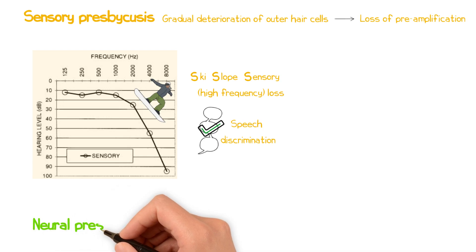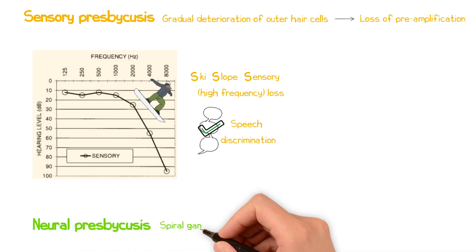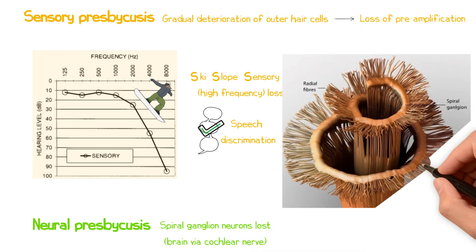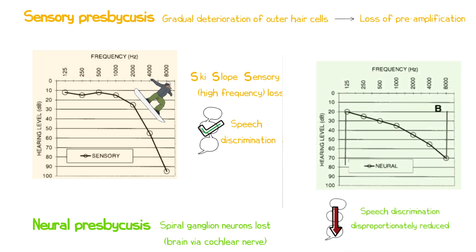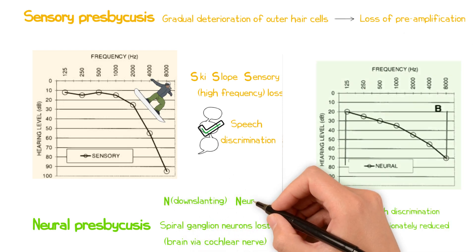By contrast, with neural presbyacusis, there is a loss of spiral ganglion neurons which transmit the auditory signals to the brain via the cochlear nerve. This results in reduced speech discrimination that is out of proportion with the patient's overall hearing levels. And a down-slanting audiogram is typically seen.